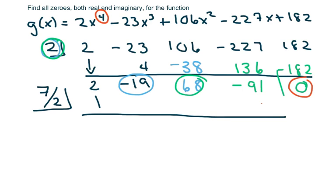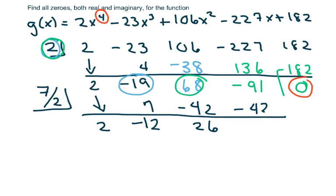I bring down the 2, multiply and add. The twos will cancel and you get 7, subtract and you get negative 12. Then 2 into negative 12 is negative 6; times 7 is negative 42, add and you get 26. Then 2 goes into 26, 13 times 7 is negative 42, and we get 91, giving us our remainder of zero. So seven halves is confirmed as a zero.